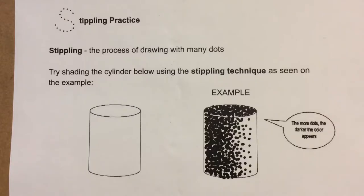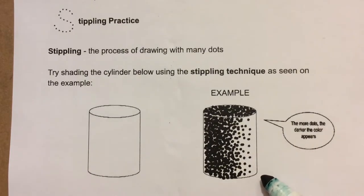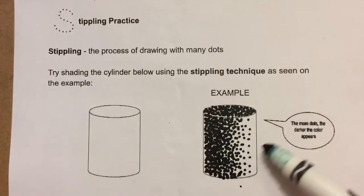So let's practice some shading using the stippling technique. If you look at the example of the cylinder, you'll see that in some areas there are more dots than others. That is because there is a shadow on the cylinder as light is hitting it on one side.